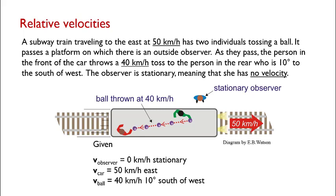So here are the givens for this problem. The velocity of our observer is 0 kilometers per hour, the velocity of the car is 50 kilometers per hour east, and the velocity of the ball is 40 kilometers per hour 10 degrees south of west.